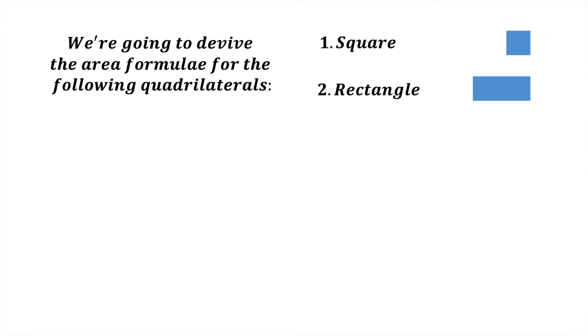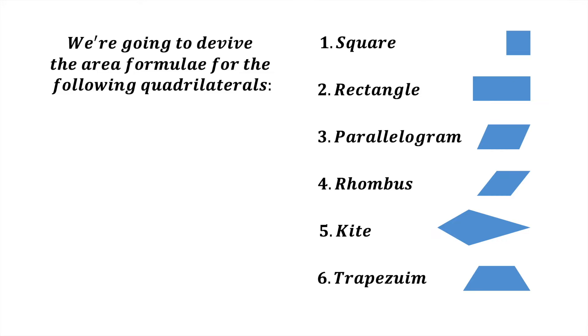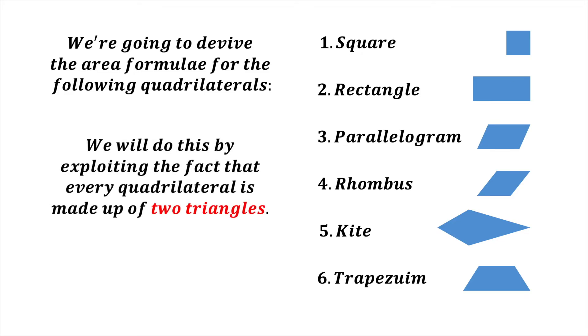We're going to derive the area formulas for the following quadrilaterals: a square, a rectangle, a parallelogram, a rhombus, a kite, and a trapezium. The way we're going to do this is by exploiting the fact that every quadrilateral is made up of two triangles, and the formula for the area of a triangle is always area equals half times base times height. All we need is some basic geometry and some simple algebra.